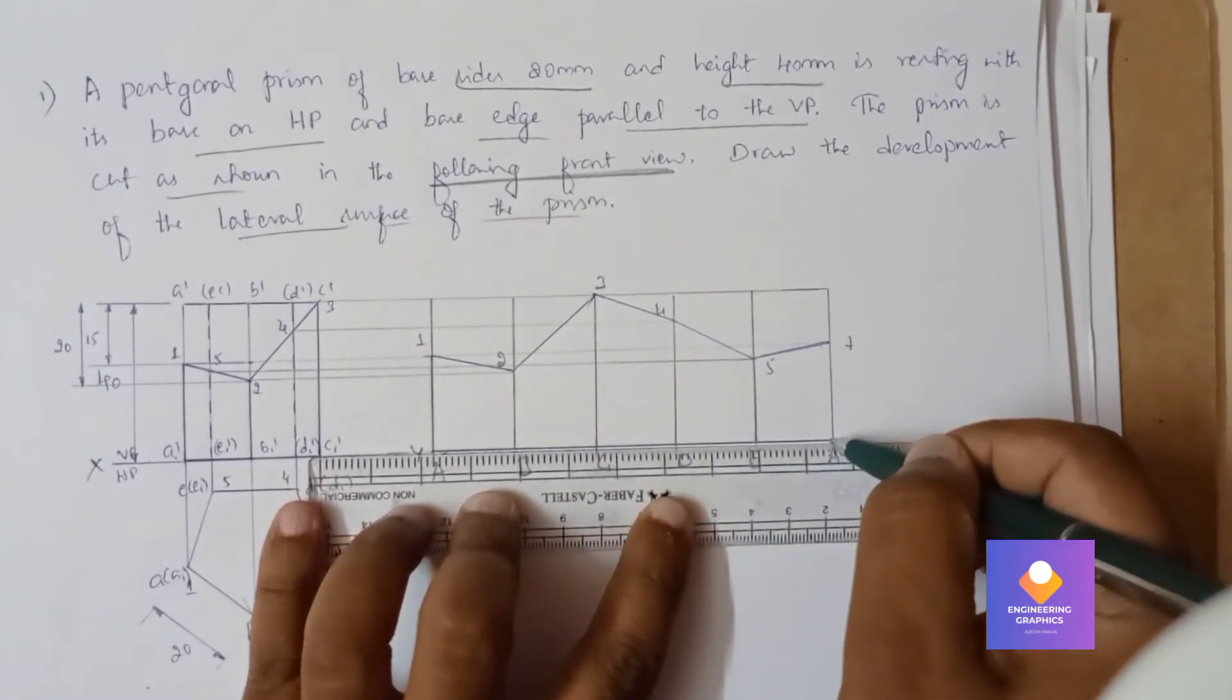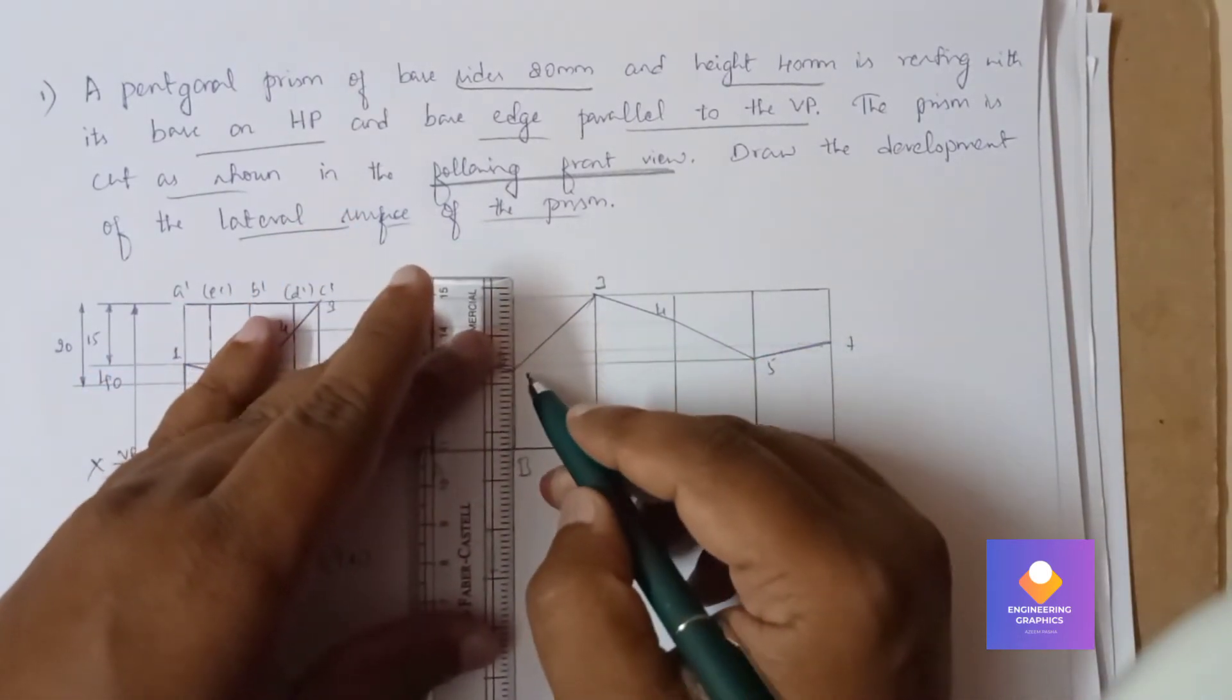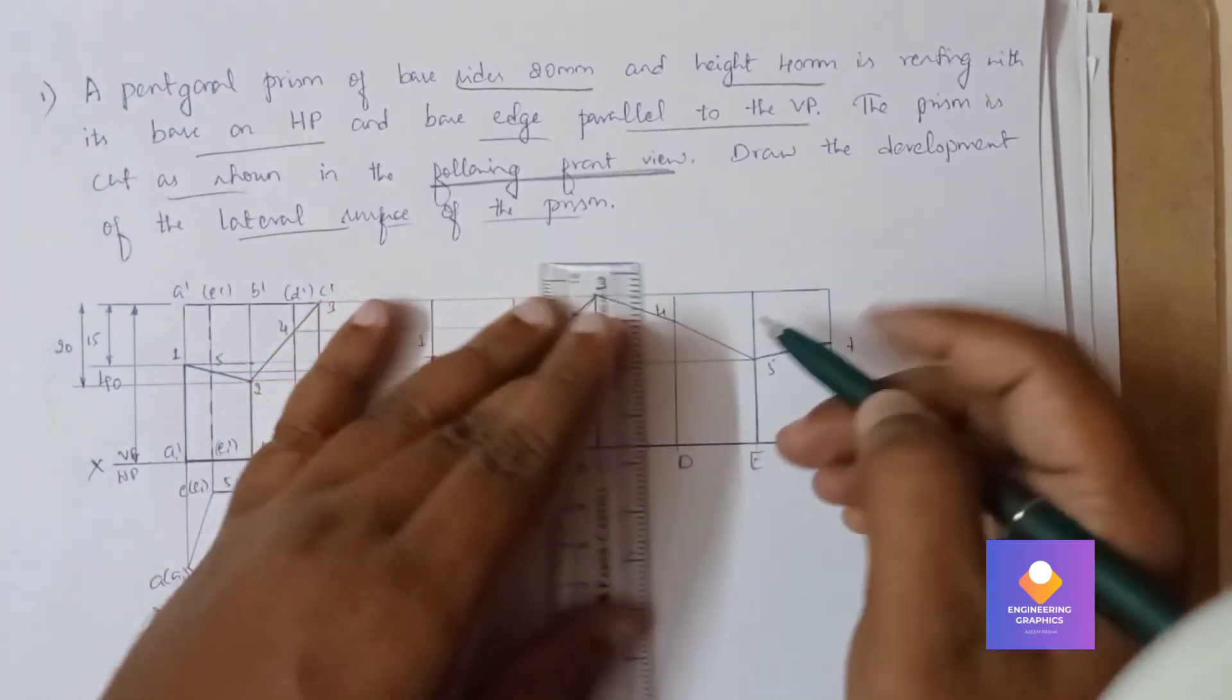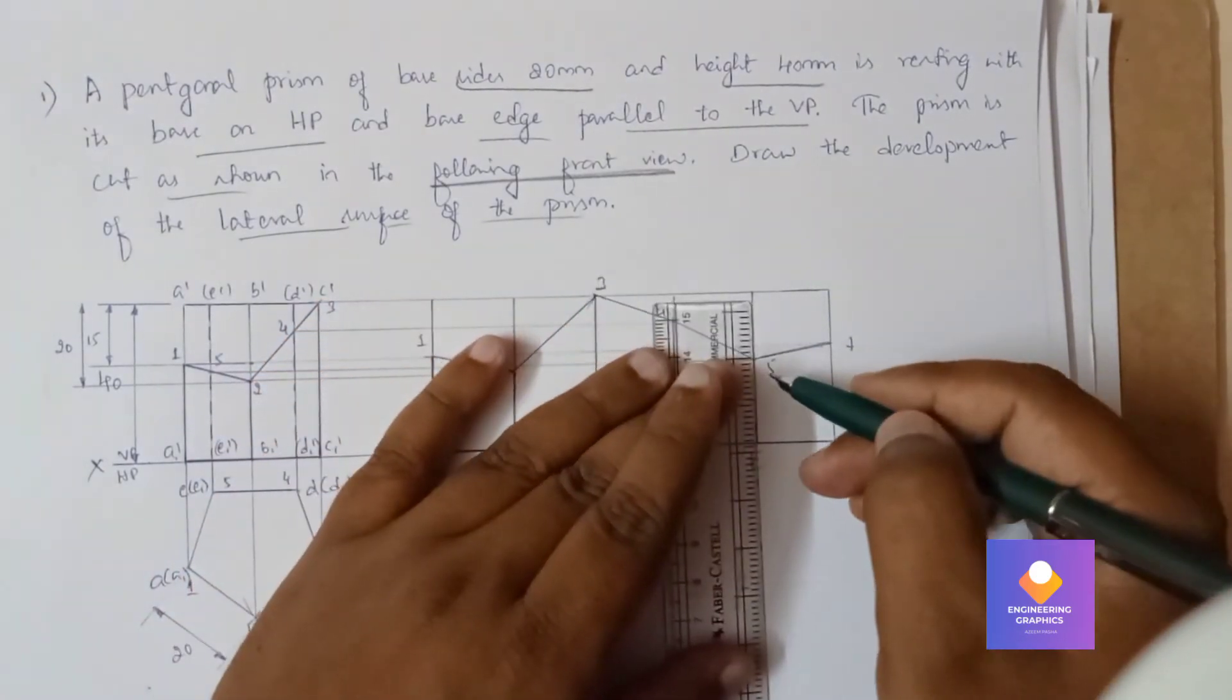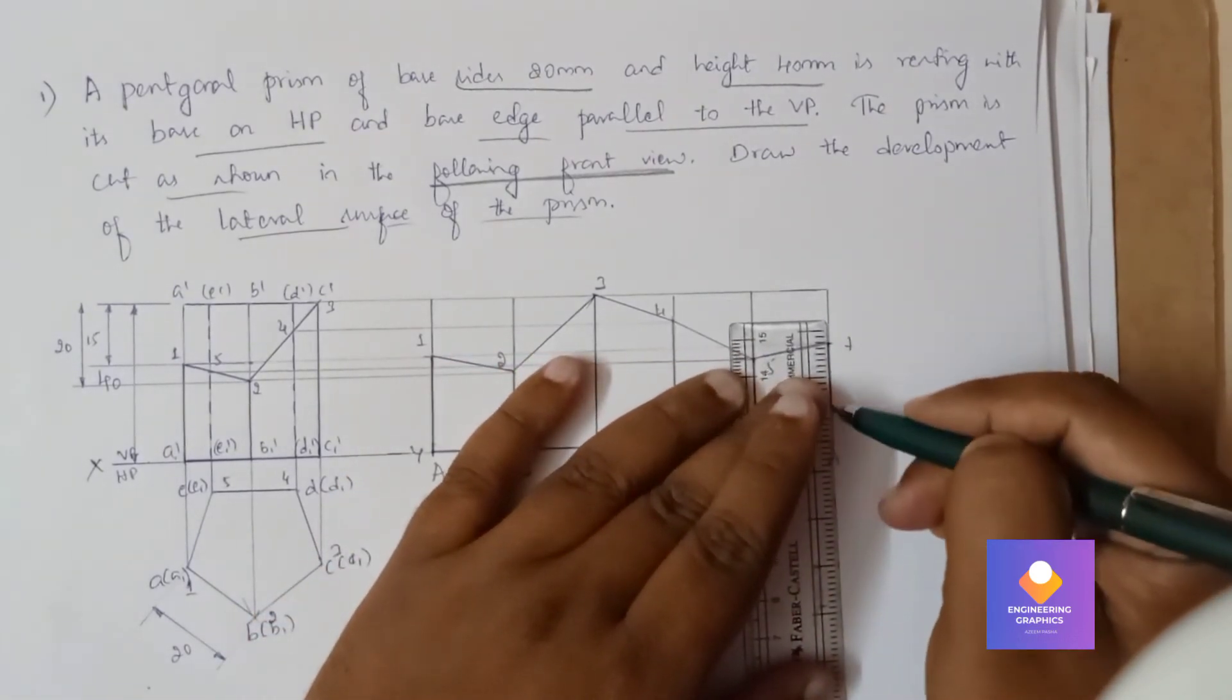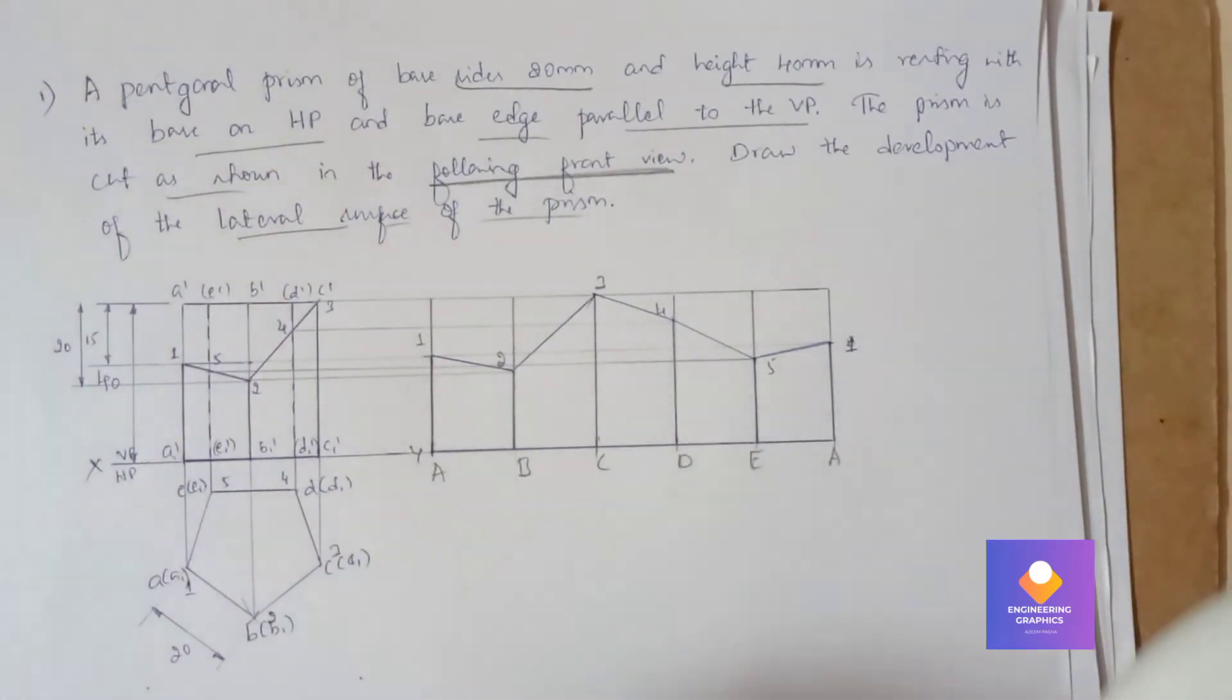All the vertical edges also we have to darken. So that is done. This completes the problem.